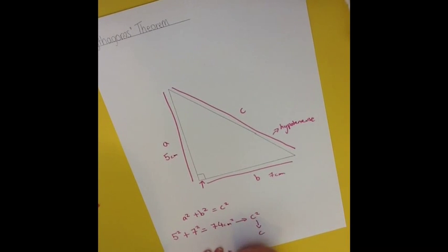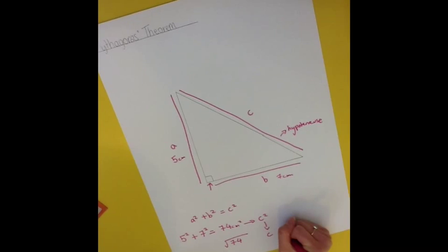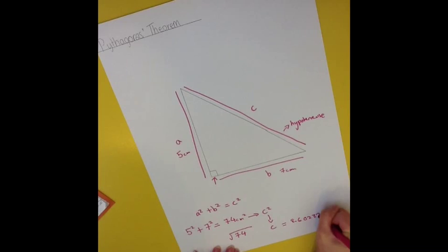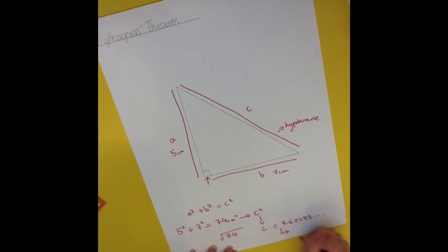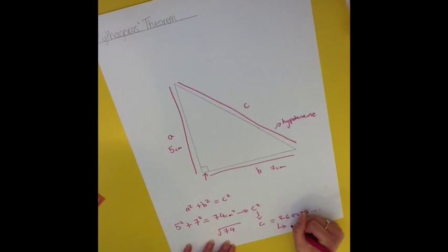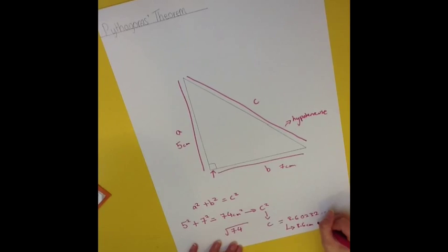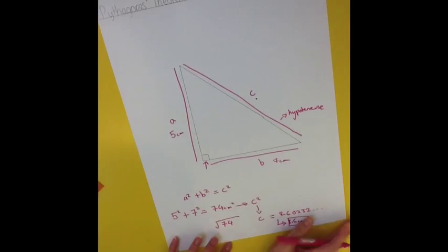Now, remember this equals c squared. So, to get to c, we want to square root 74, and that gives us 8.60232, and so on. But, we need to round this up to one decimal place, so it's 8.6 cm. That is the answer for the side length of c.